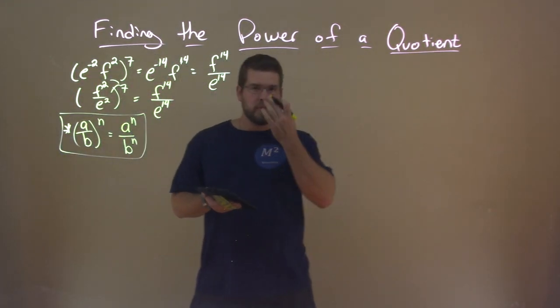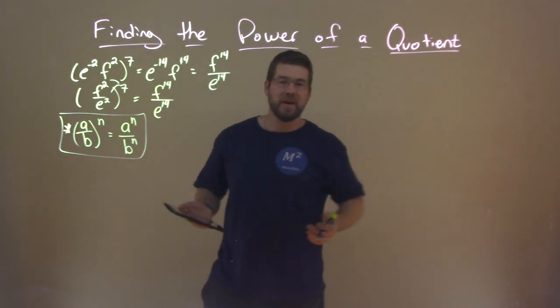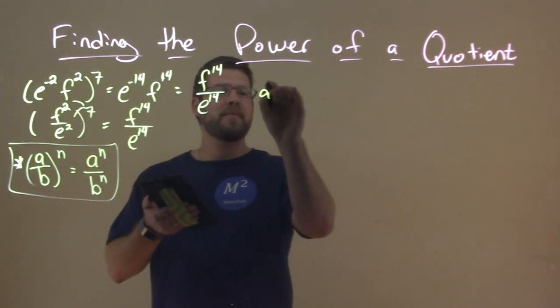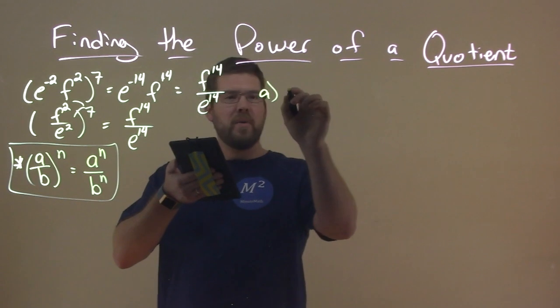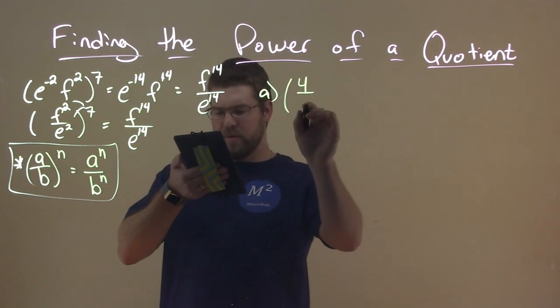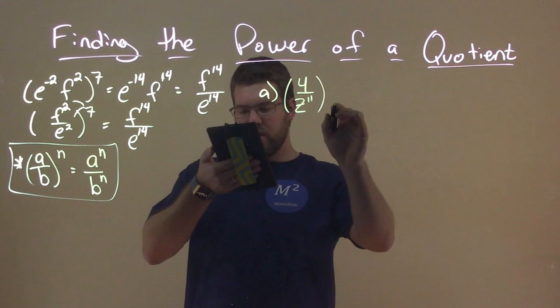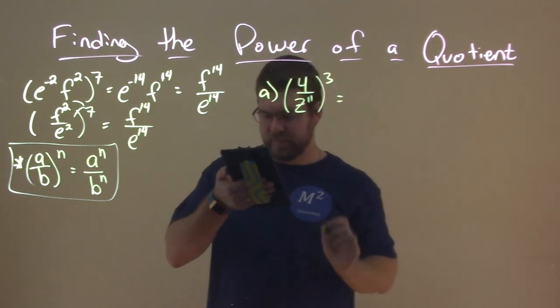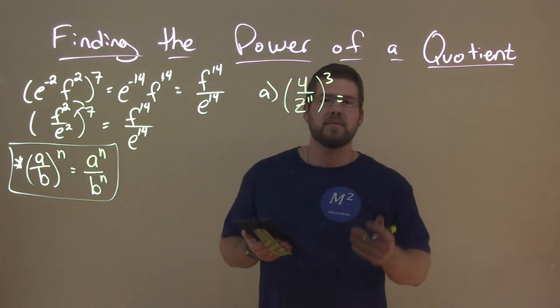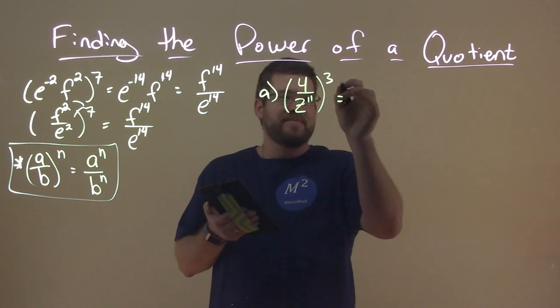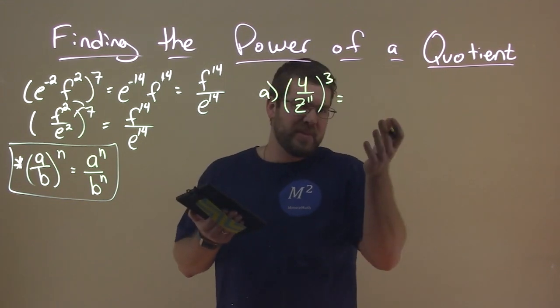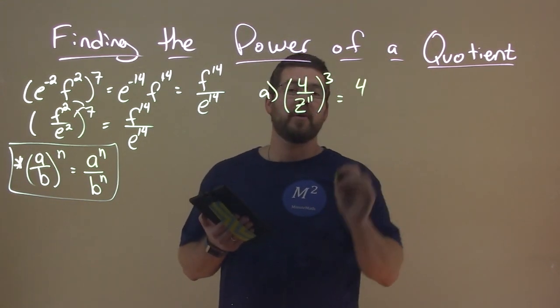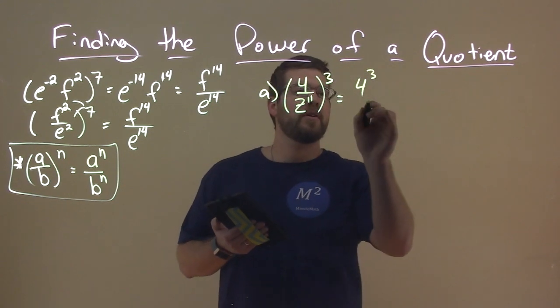And we have our little rule here telling us that. So let's apply this rule and solve some problems. Let's learn by doing. So let's go with a. We have 4 over z to the 11th power all to the 3rd power. Well, our rule states that we can, in a sense, distribute that 3rd power to both the numerator and denominator. So we have 4 to the 3rd here.